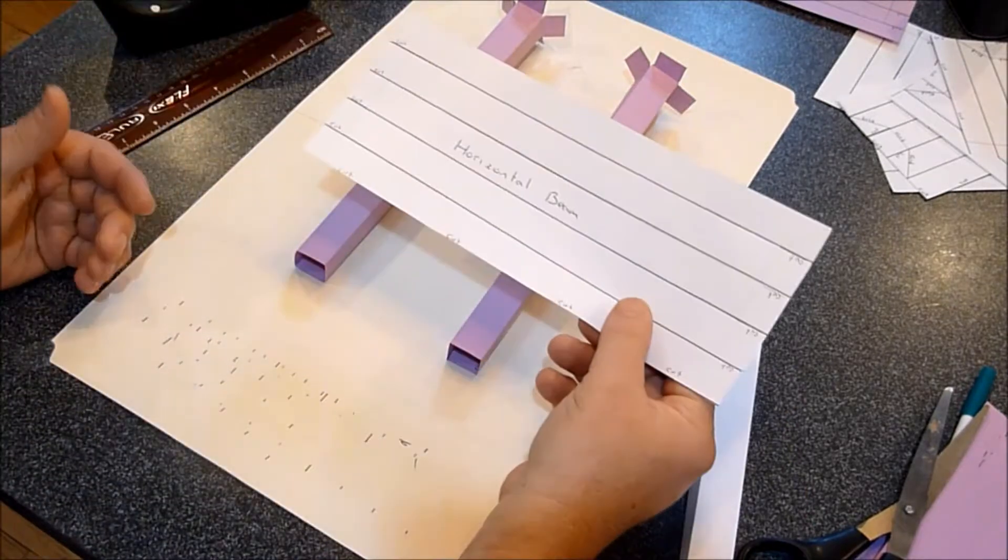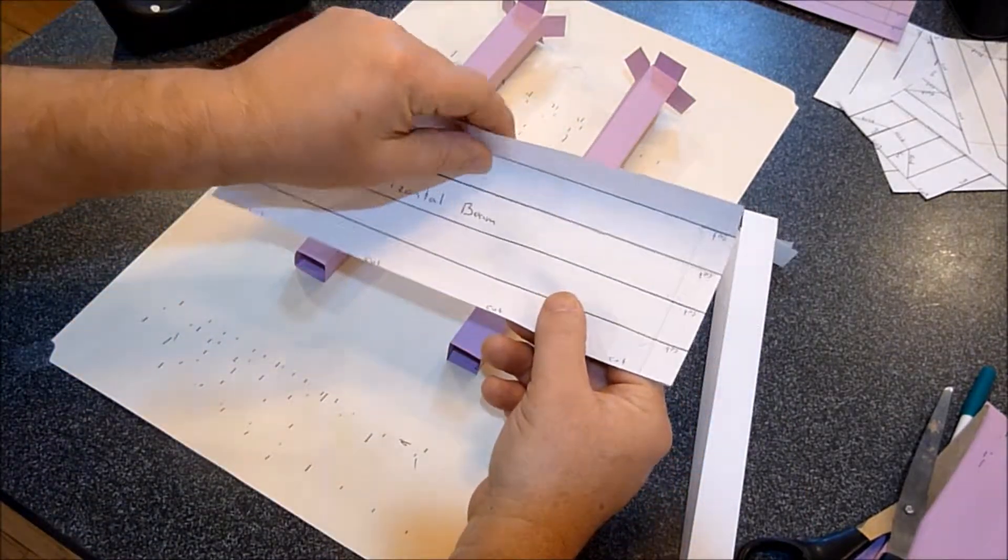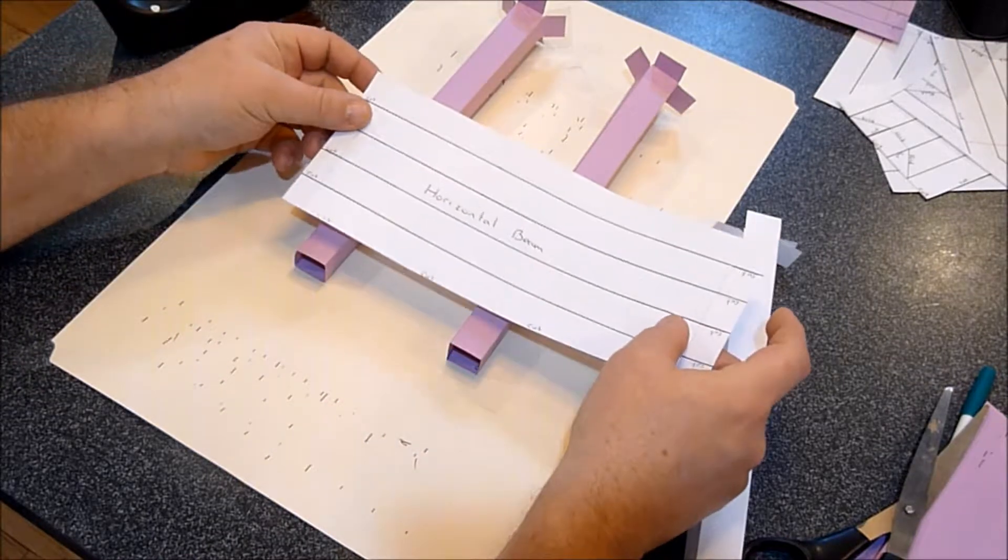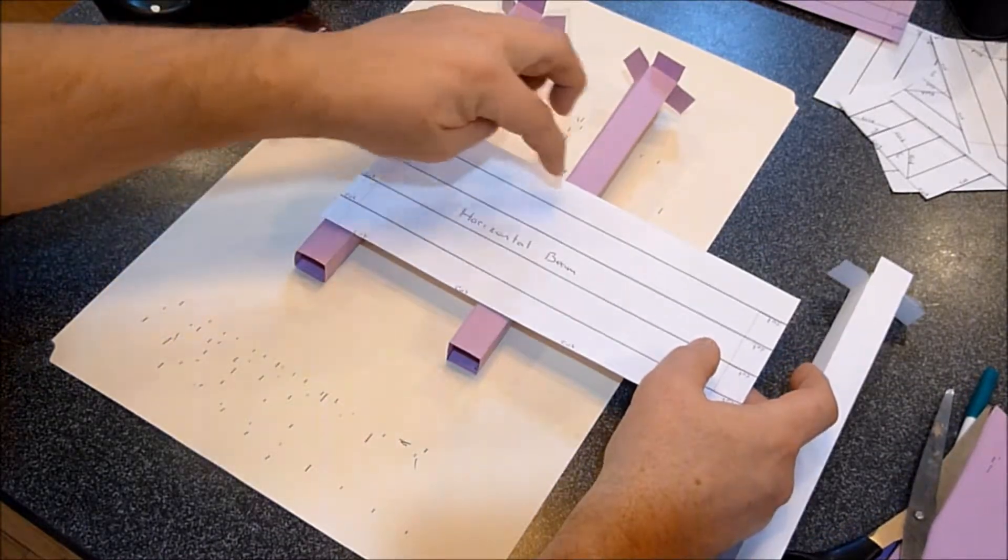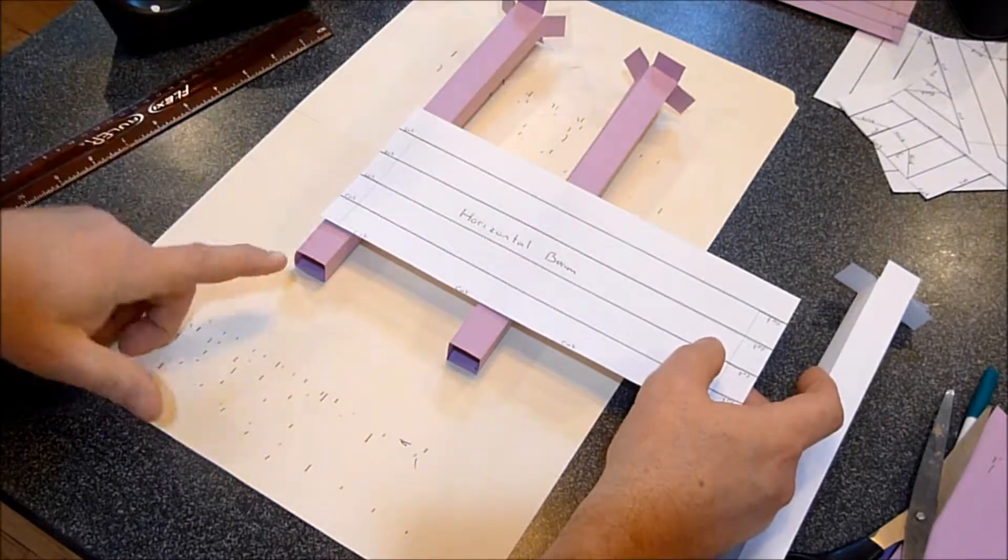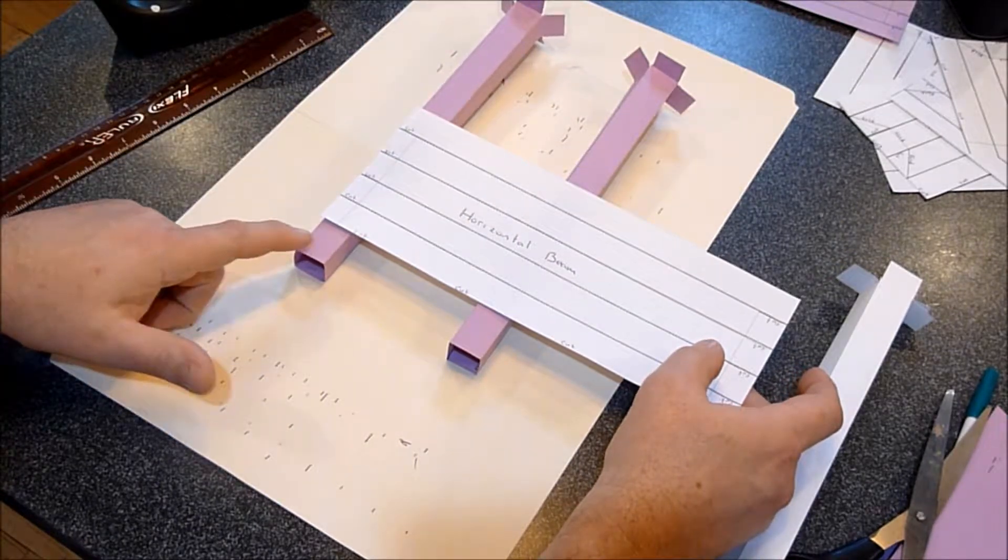All you do is you take your original template, you've already drawn your lines, and all you do is you just measure the span from one vertical beam to another.